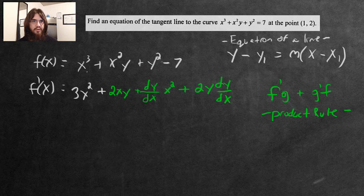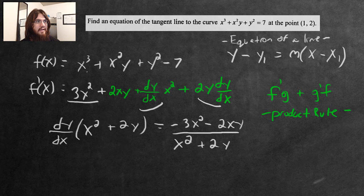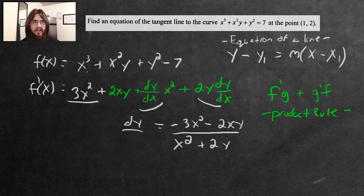I would factor out a dy/dx from this term and this one, leaving me with x² plus 2y. I'll put these two terms onto the right-hand side: negative 3x² negative 2xy. Now if I divide everything by x² + 2y, I have isolated dy/dx. So dy/dx equals (-3x² - 2xy)/(x² + 2y), which is exactly what we want.